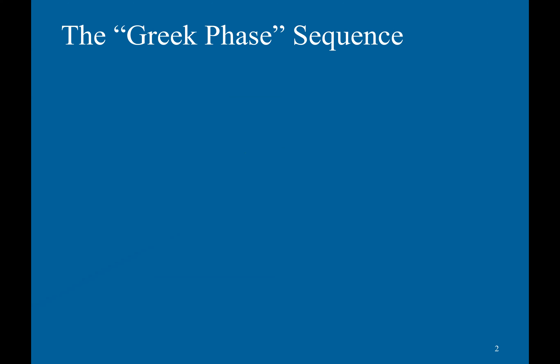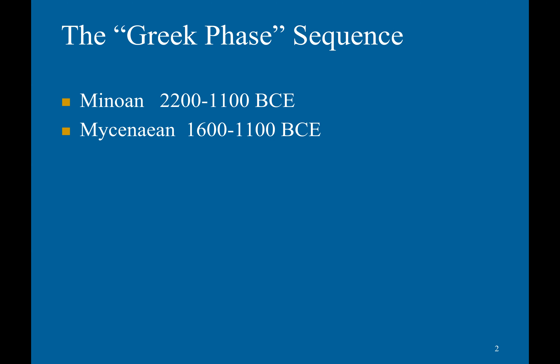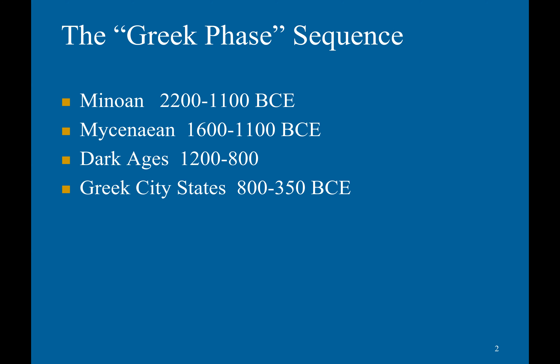Here is the sequence of major civilizations of the Greek phase: the Minoan from 2200 to 1100 BCE, the Mycenaean from 1600 to 1100 BCE, the Dark Ages from 1200 to 800 BCE, the Greek cities from 800 to 350 BCE, and the Macedonian Empire from 350 to 150 BCE.